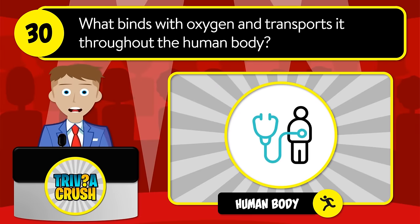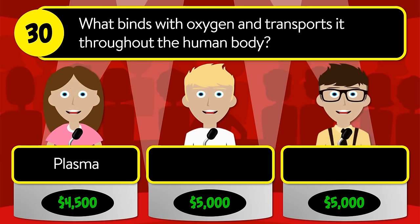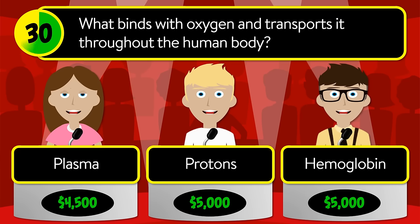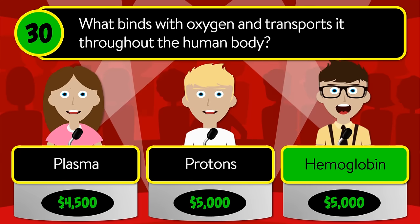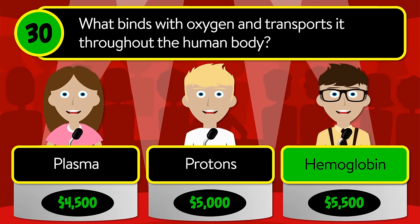Question number thirty: what binds with oxygen and transports it throughout the human body? Is it plasma, protons, or hemoglobin? The correct answer is hemoglobin.